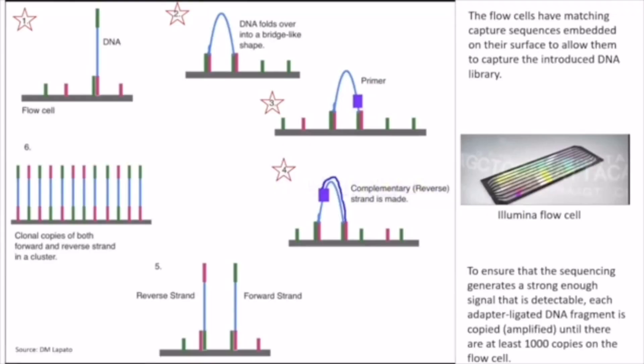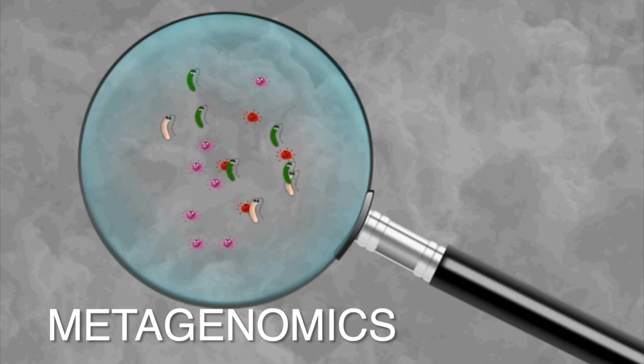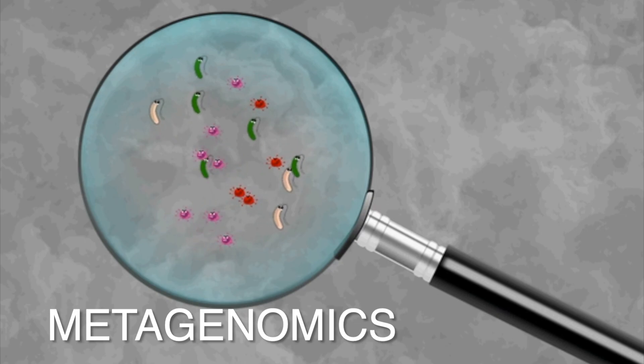The first comprehensive studies of viromes were done by shotgun community sequencing, and this form of sequencing is often referred to as metagenomics.